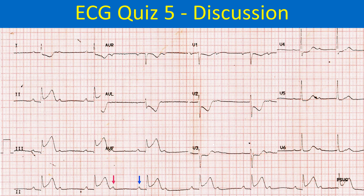The PP interval is half that of the RR interval. The P wave marked by the red arrow is non-conducted, while the P wave marked by the blue arrow is followed by a QRS complex. So it is a 2:1 AV conduction — the highest grade of second degree AV block.